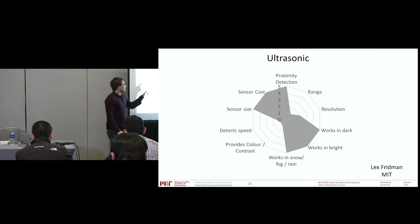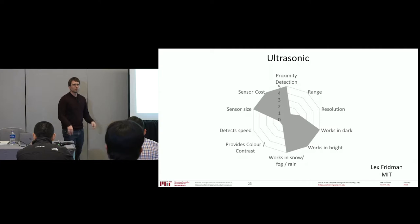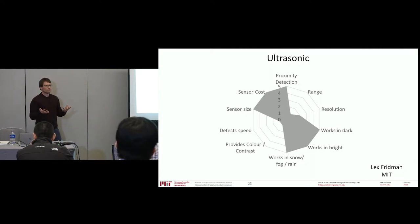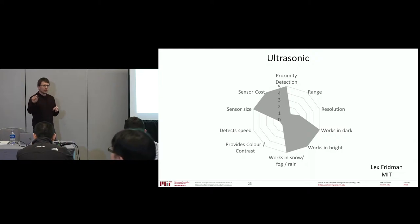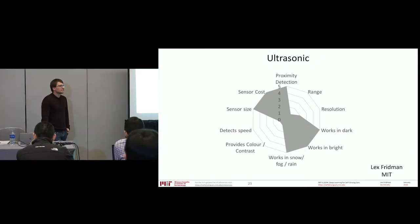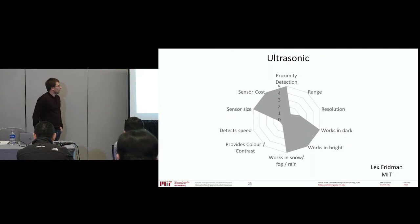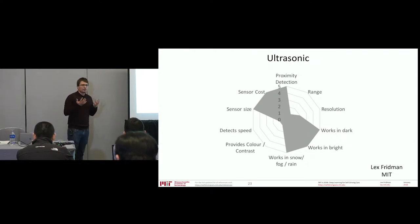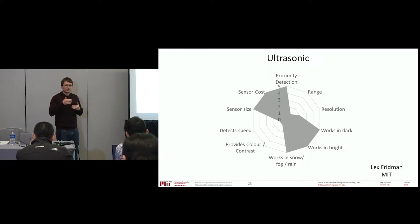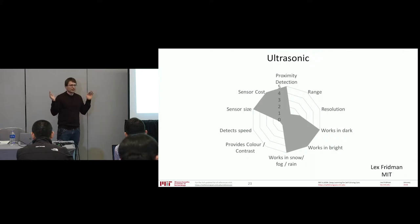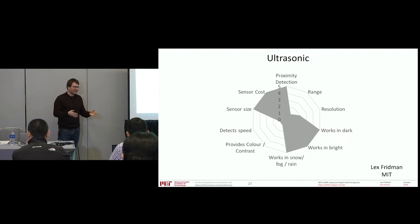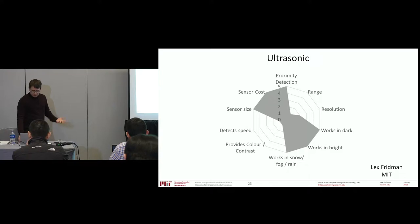Ultrasonic sensors are tiny and cheap. If you just want to know whether you're about to run into something, they're pretty good. If you look at the rear bumper of a car with parking assist, the little dots each contain a sonar sensor costing less than $5 — maybe even pennies depending on negotiation. Very cheap sonars just tell you in binary whether there's something within five meters or not; slightly better ones tell you how far away something is, but basically the presence of a thing is binary. Small objects might be missed.